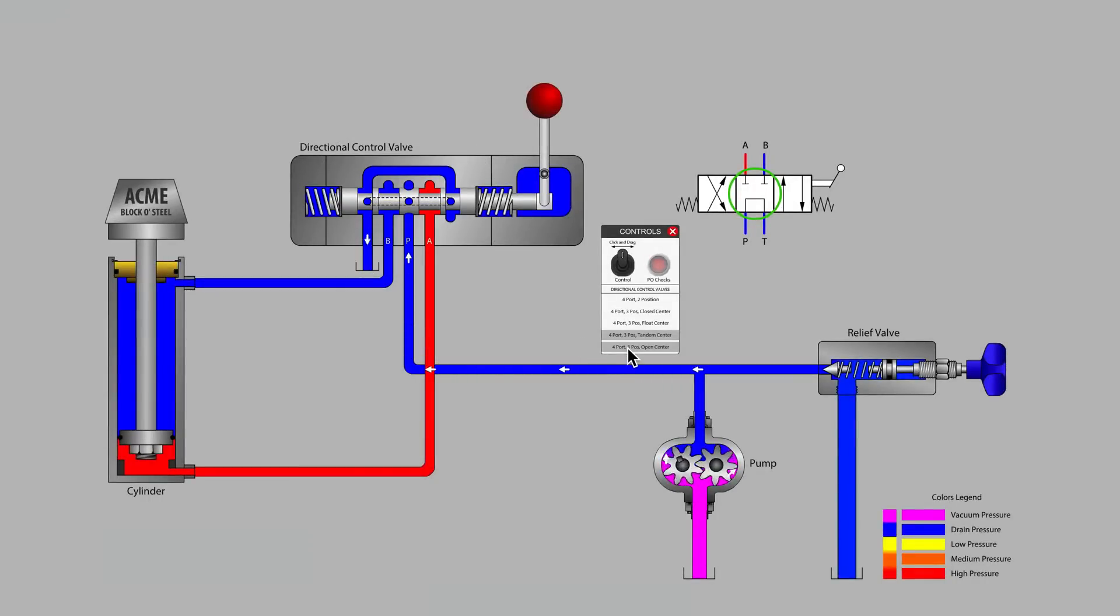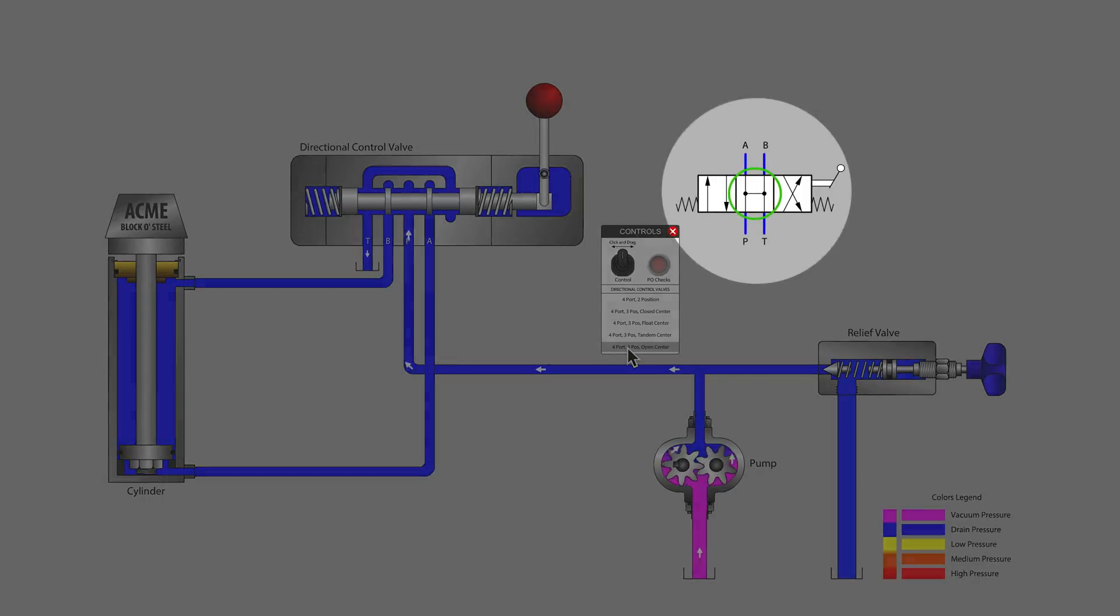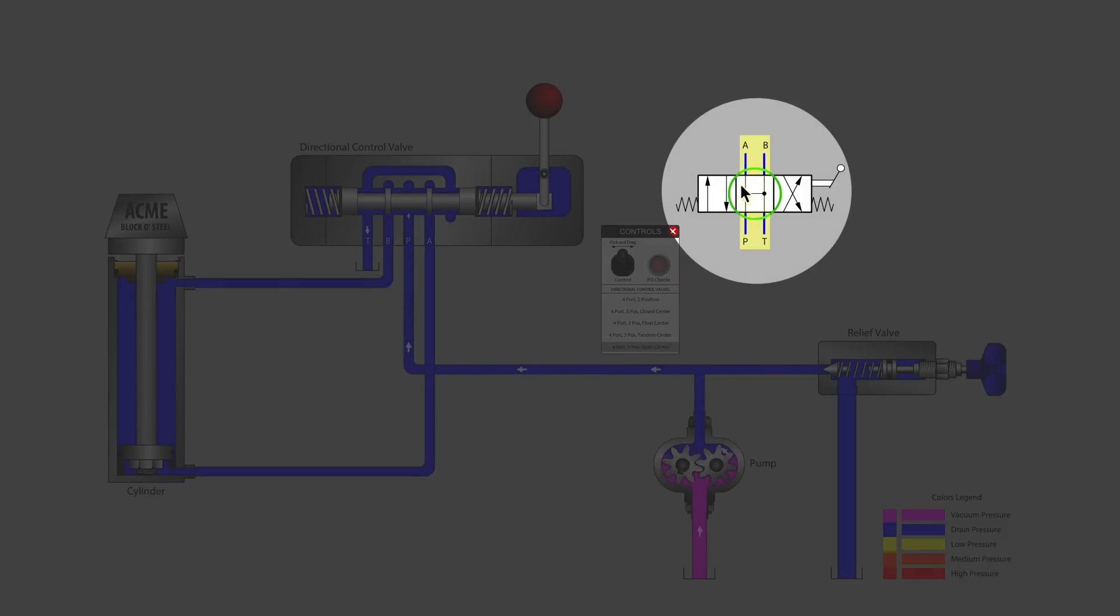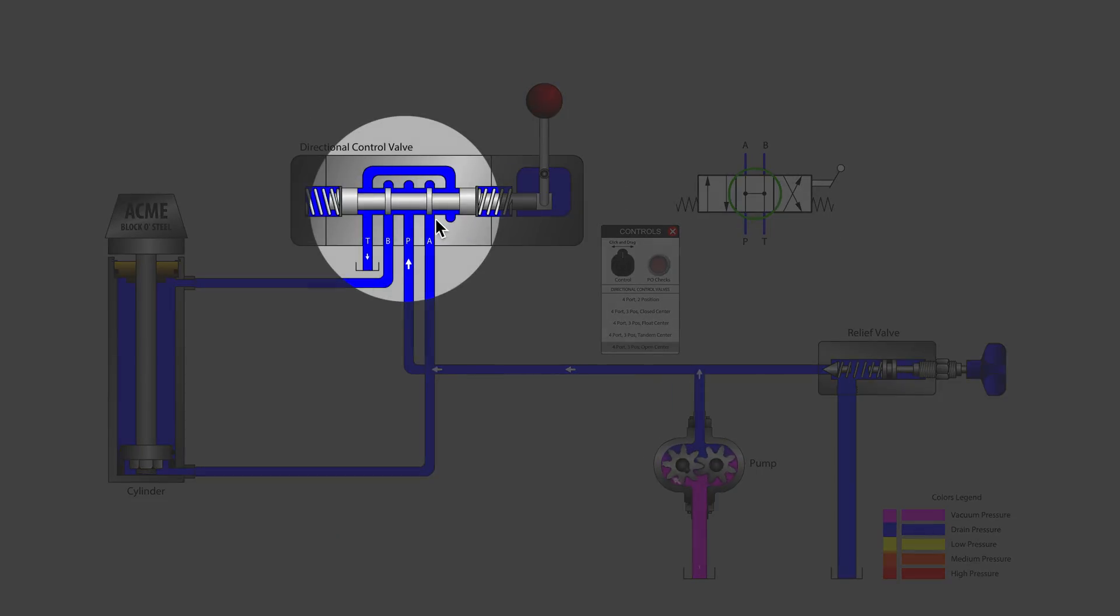Now let's switch to the open center valve. Notice in the symbol that all ports are shown connected together when the valve is in neutral. Moving to the cutaway, we see that the lands on the spool have been machined back so far that they do not cover any ports while in the center or neutral position.